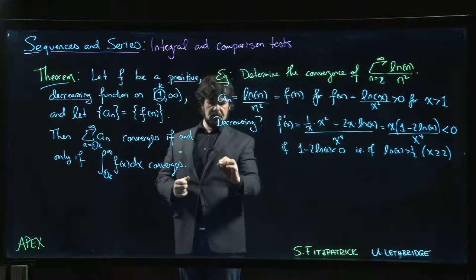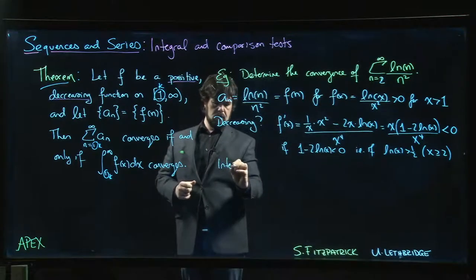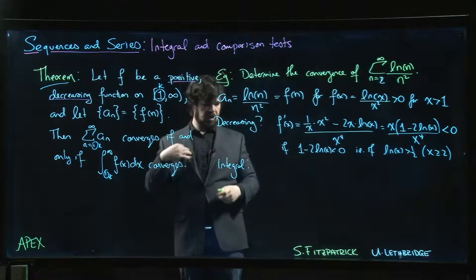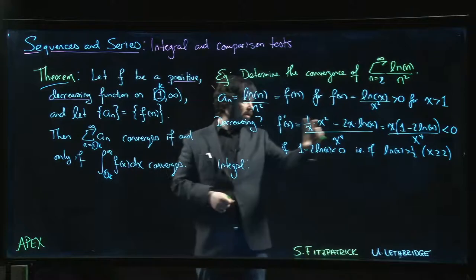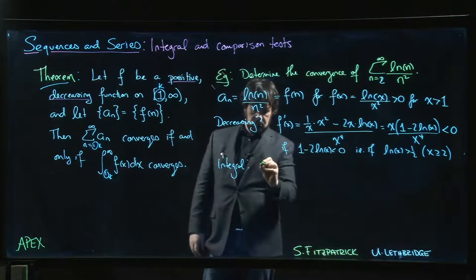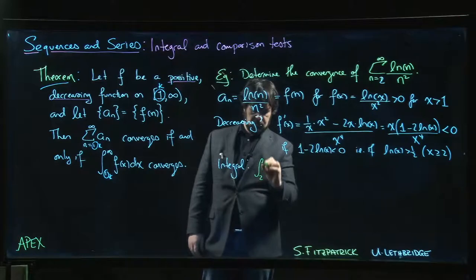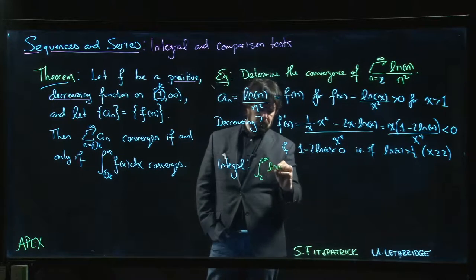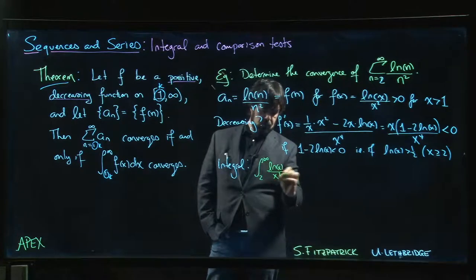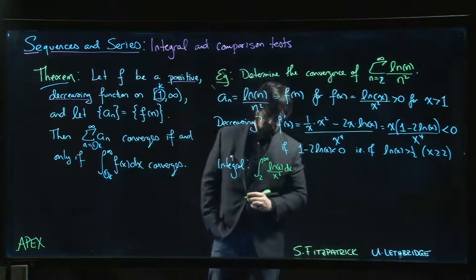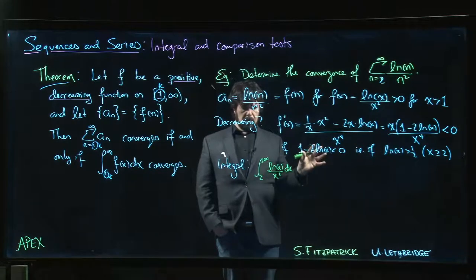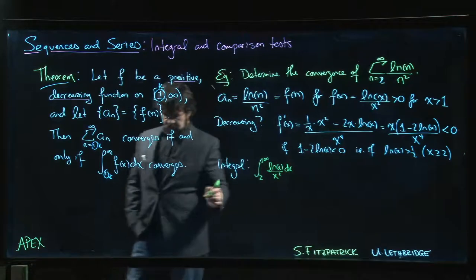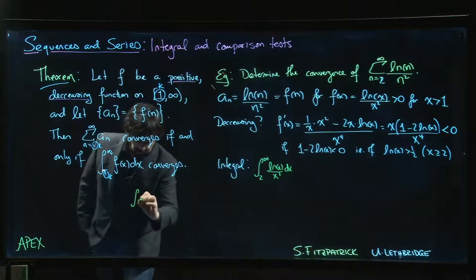So now we look at the integral. Let's do that in green just so it stands apart from that. We need to look at the integral from 2 to infinity. We can do 1 if you want. Natural log of x over x squared times dx. Got to integrate by parts for this one. Let's kind of do that over on the side just to remind ourselves how that goes.